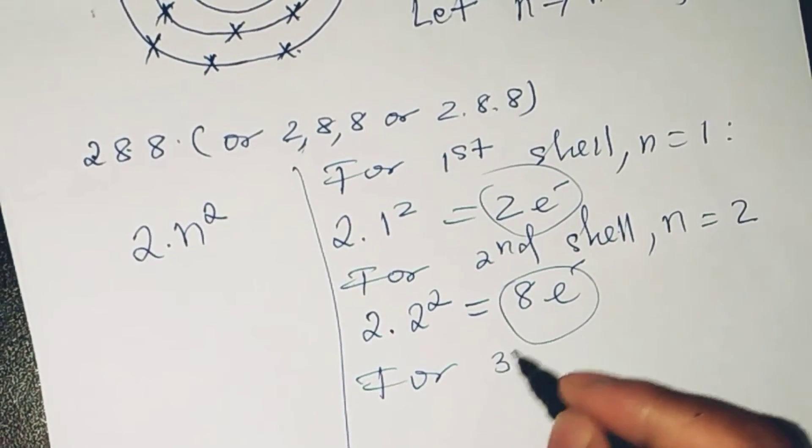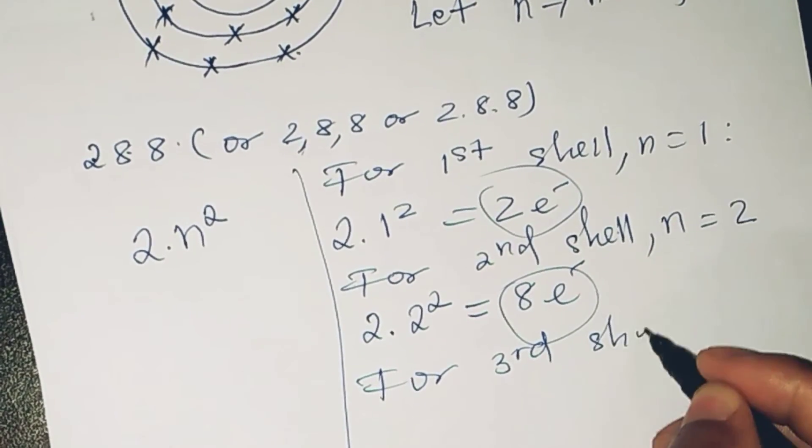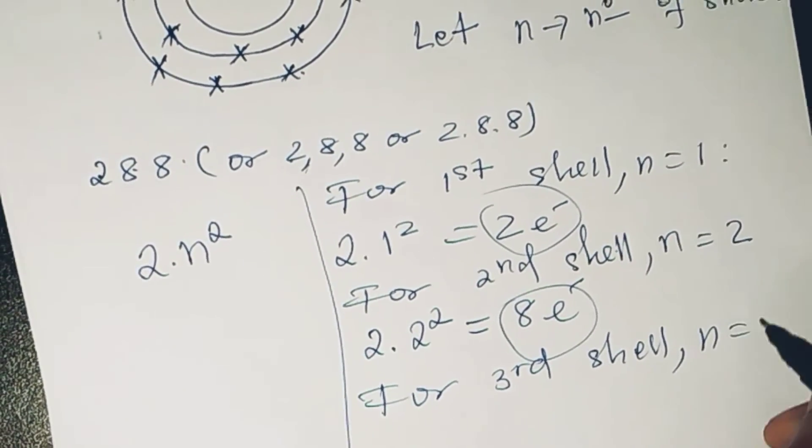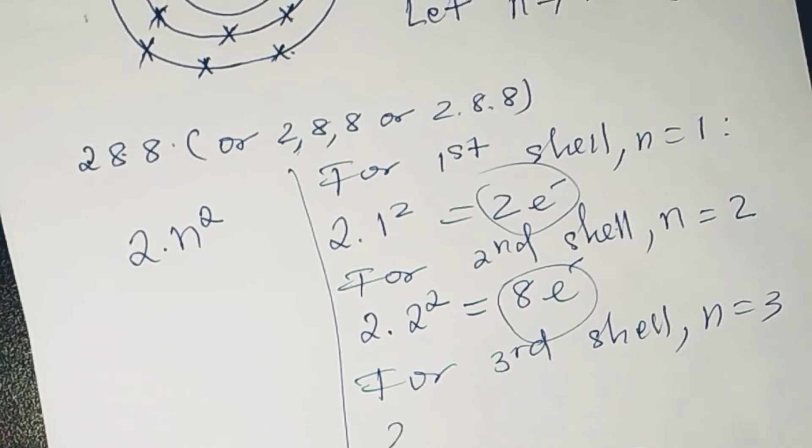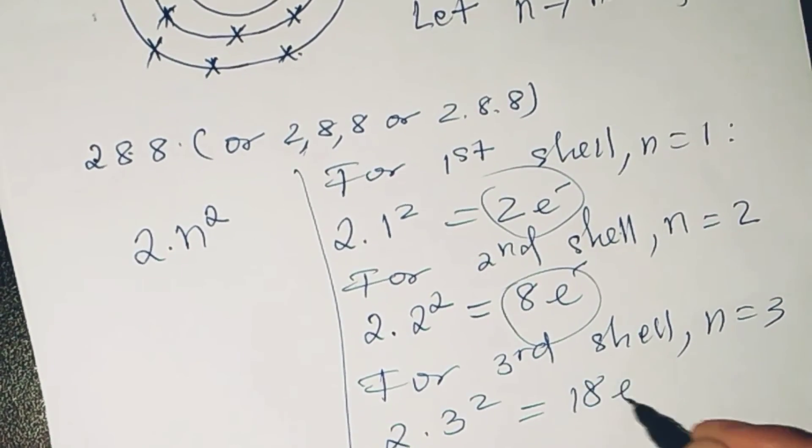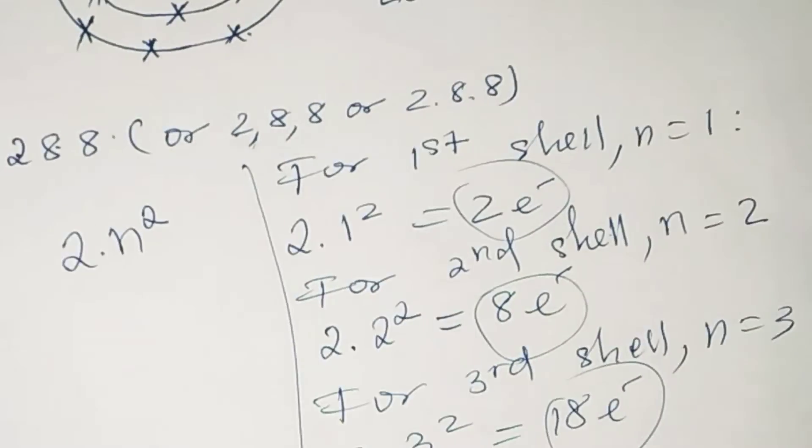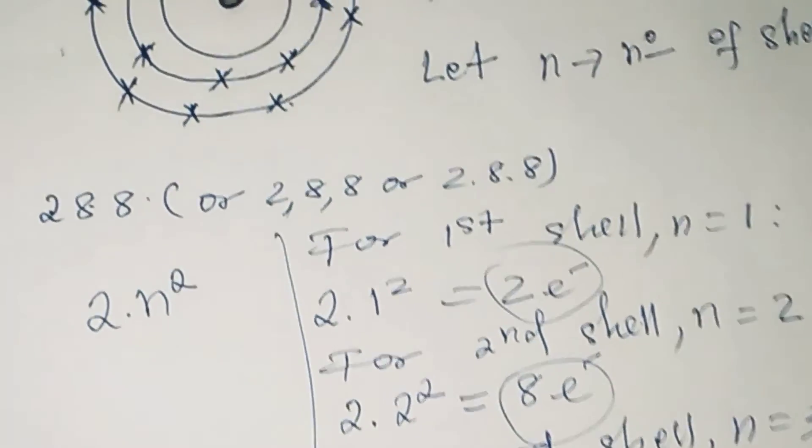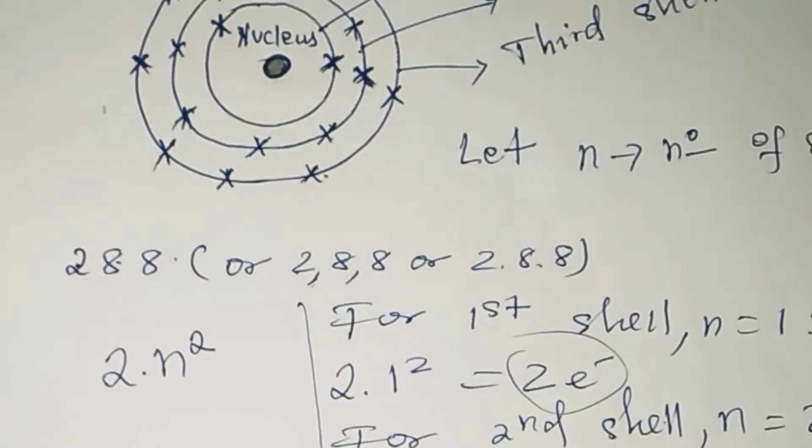For the third shell, n equals 3, so 2 times 3 squared equals 18. So it holds up to 18 electrons, but it fills up to 8 electrons.